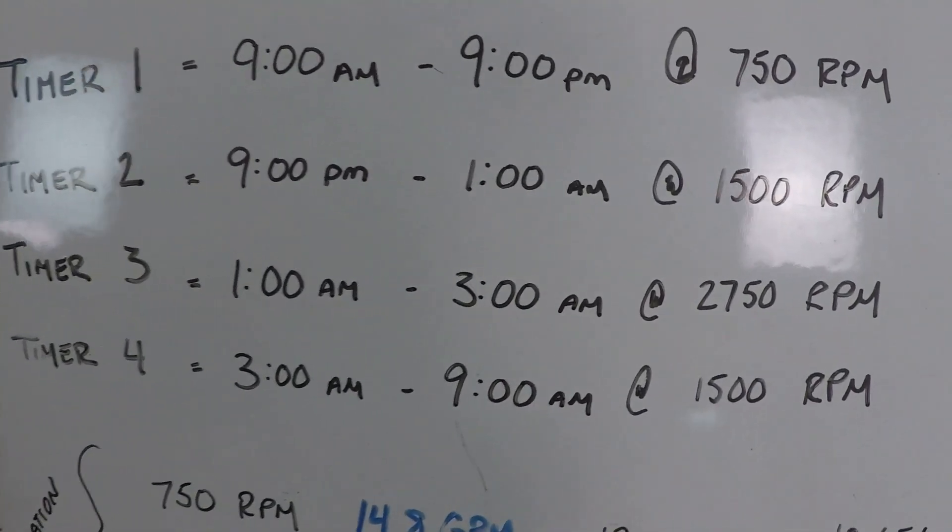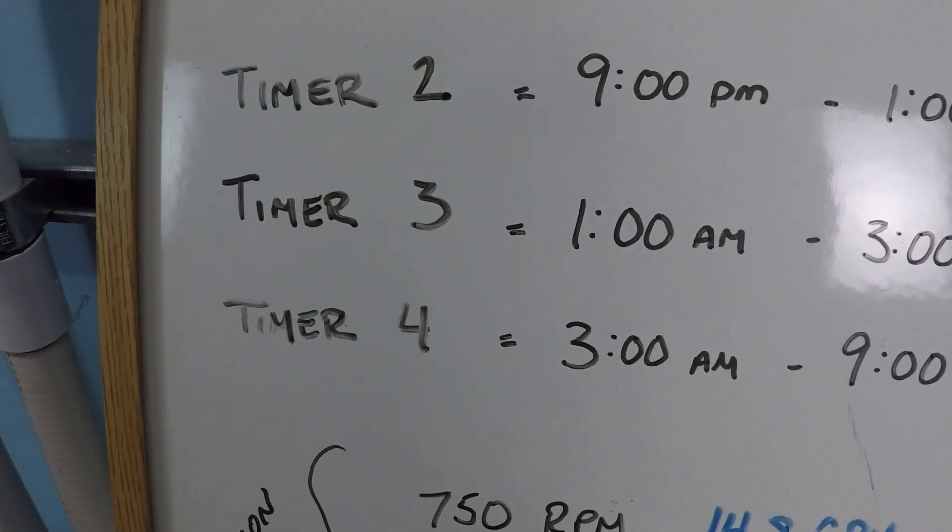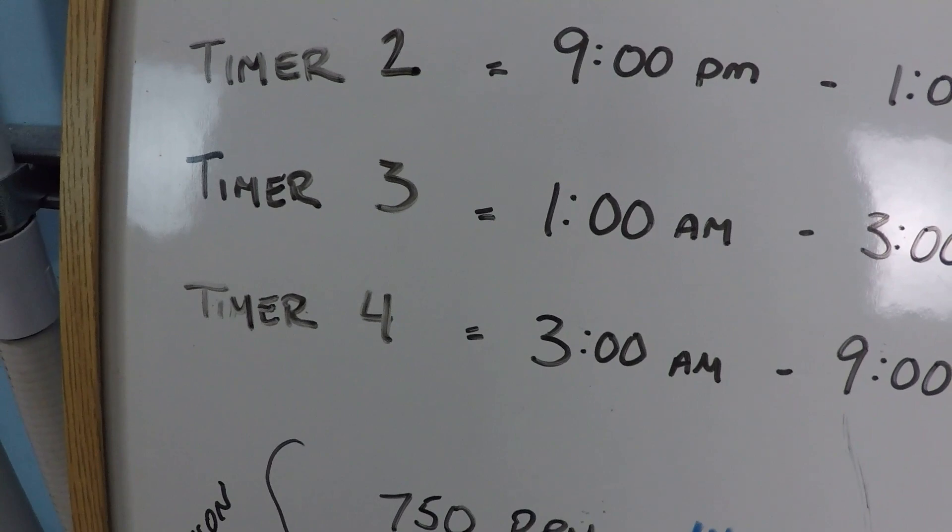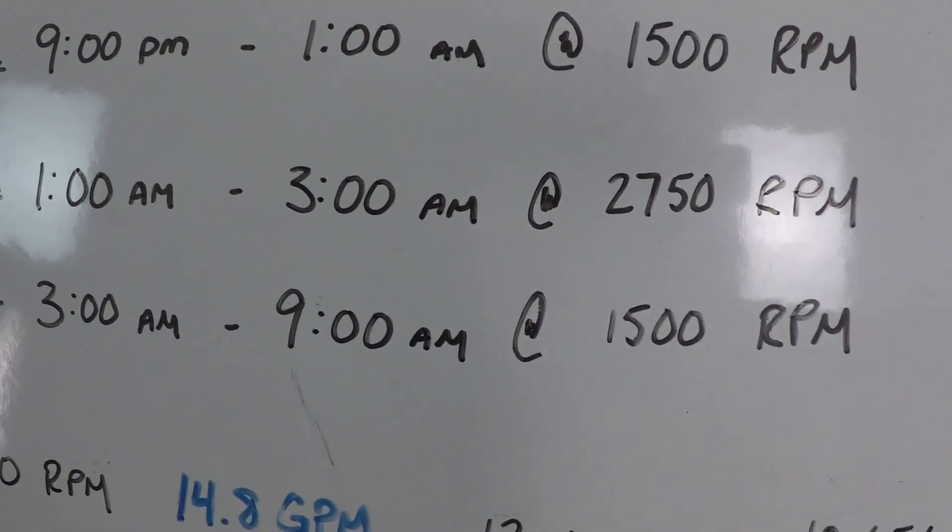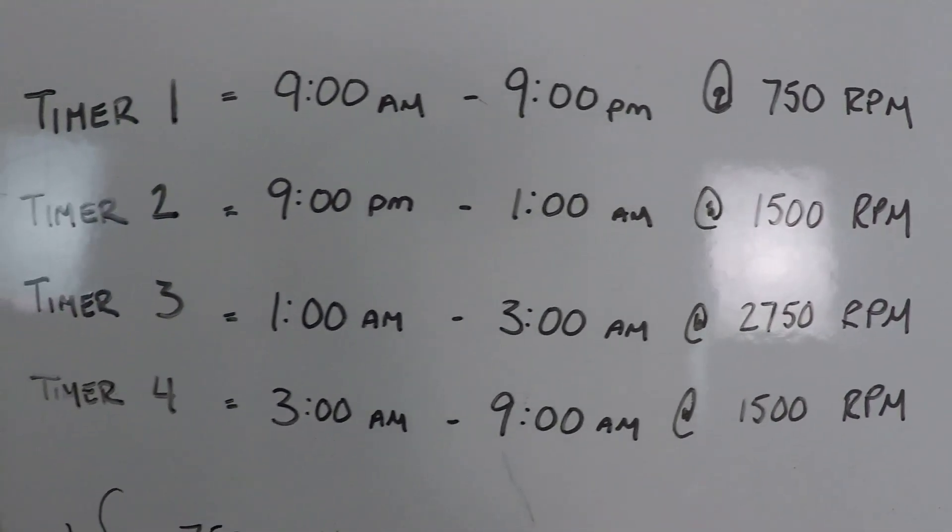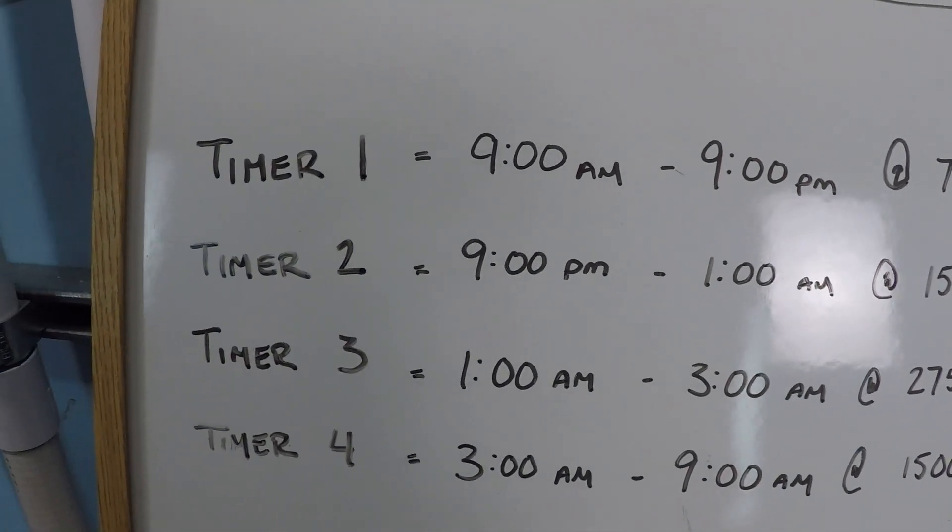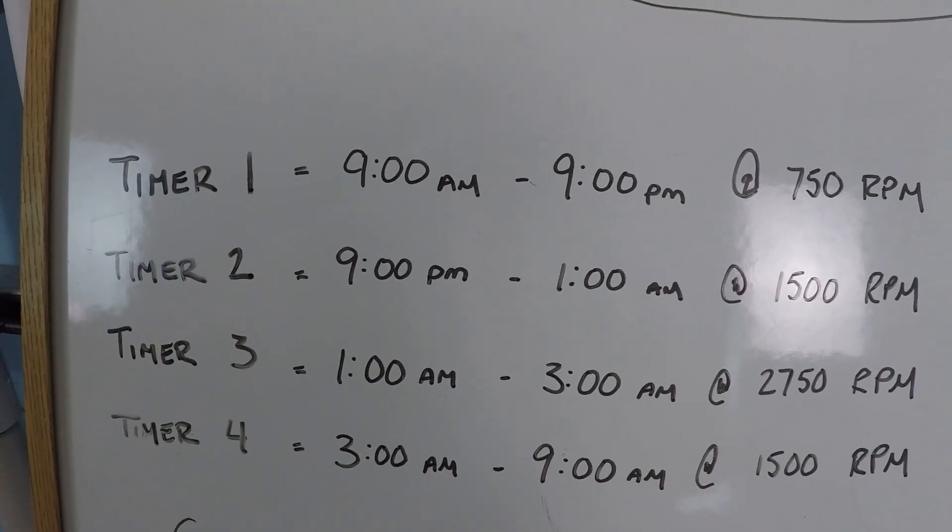So, my low, medium, and high speeds aren't actually the very highest. And getting to timer 4 here, again, from 3 a.m. to 9 a.m., I'm going to be running again at 1500 rpm. So, it's only 3 speeds total, but I've got it split up over 4 timers, just to be a little bit more dynamic, a little bit better for the quality of the filtration.